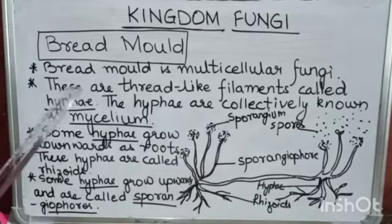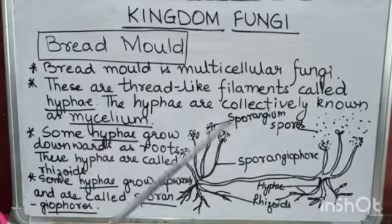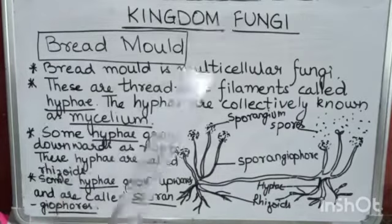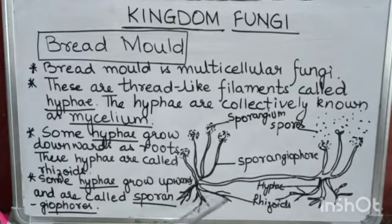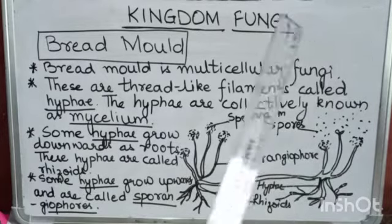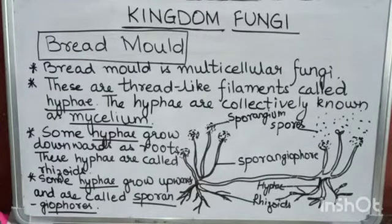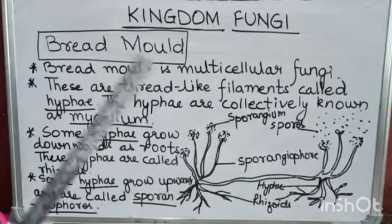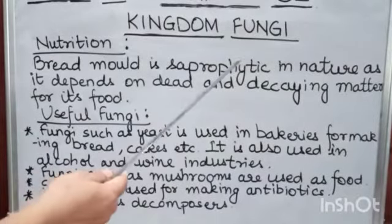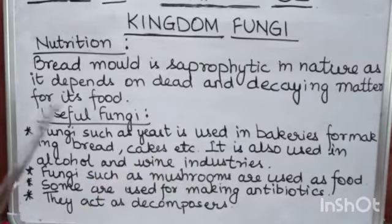Now comes their nutrition. Bread mold is saprophytic in nature, meaning it depends on dead or decaying matter for nutrients. The hyphae of the fungus spread through the decaying matter by means of microscopic tubes containing cytoplasm — the fluid which contains many organelles. The fungi secrete digestive enzymes into the food material and absorb the digested food back into the hyphae.